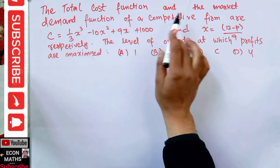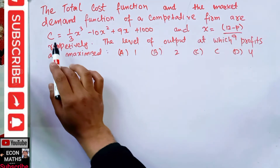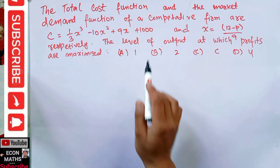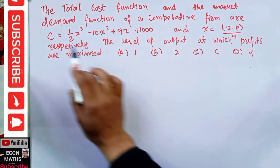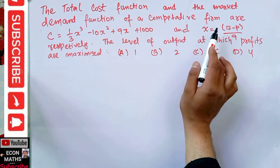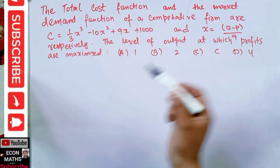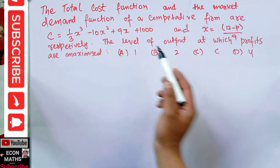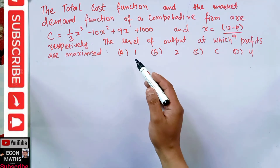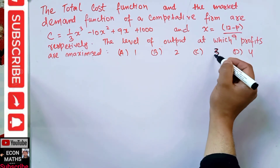The total cost function of a competitive firm is C = (1/3)x³ - 10x² + 9x + 1000, where C is cost and X is quantity. The market demand function is X = (12 - P)/9, where P is price. The question asks for the level of output at which profits are maximized, with options 1, 2, 3, and 4.